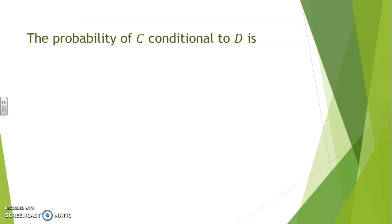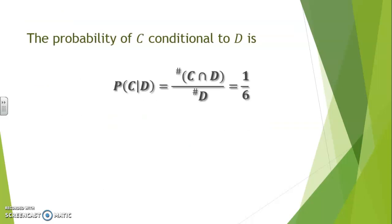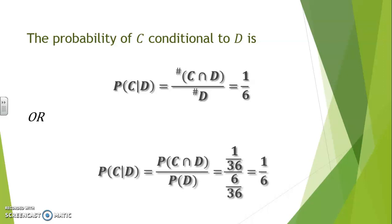Now let's look at the probability of C conditional to D. Recall that P of C conditional to D means counting the number of ways C and D occur together. In the listed form, one sample point is common to C and D — the (3,4) combination — whereas the cardinality of D was 6. So 1 out of 6. Likewise, the ratio of probabilities gives 1/36 for the intersection of C and D, over 6/36, the probability of D, revealing the same probability of 1 over 6. So knowing that the sum of the dice is 7, there is a 1 out of 6 chance that the first die had a 3.